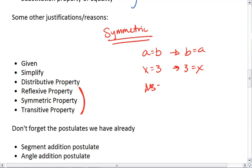If AB equals CD, then CD equals AB. If the measure of angle x equals the measure of angle y, then the measure of angle y equals the measure of angle x.